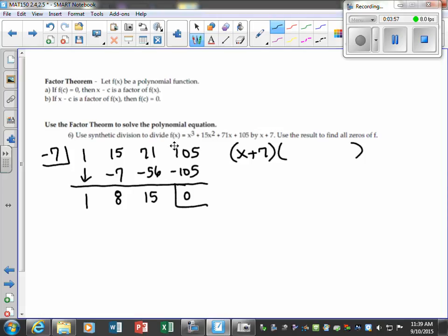So we know x plus 7 is a factor. What's going to be left over? If this was x to the third, what's our solution to start with? x squared, x. So what I'm left with is x squared plus 8x plus 15. Well, I know one of the zeros from this one because we just found that. What can I do with this to keep going to find all of them?